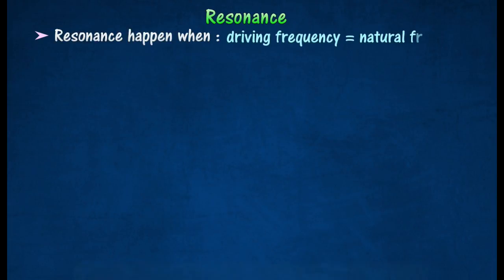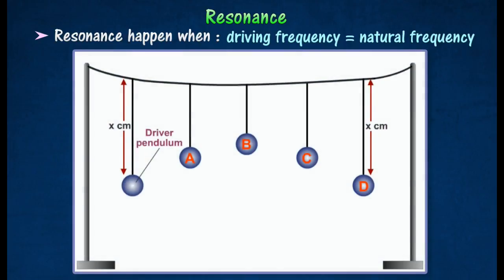Resonance is a unique case of forced oscillation which produces maximum amplitude in a system when the frequency of a vibrating object acting on the system is equal to its natural frequency.